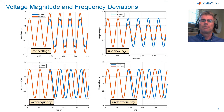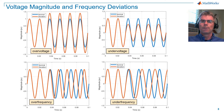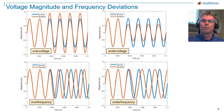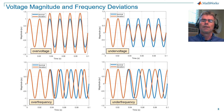Here I'm showing some fundamental deviations in voltage magnitude and frequency. At the top left, we have an overvoltage, where the voltage magnitude is greater than nominal magnitude for an extended period of time. If the voltage increases in magnitude for a short duration, it's called a voltage swell. On the top right, we have an undervoltage, where the voltage magnitude is less than nominal magnitude for an extended period of time. If the voltage decreases in magnitude for a short duration, it is called a voltage sag.